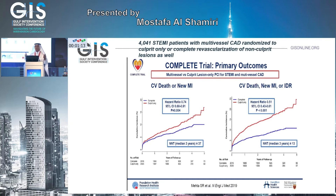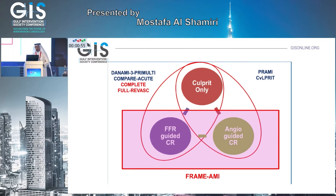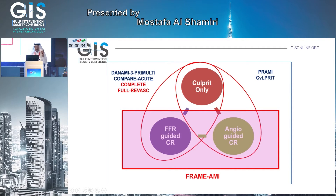The COMPLETE trial used only 2% FFR, with most procedures done at the index or acute presentation, and showed a significant complete revascularization benefit compared to culprit-only. We can see that PRAMI and Cardiovascular Neolaberties compared culprit-only with angiographic complete revascularization, while on the other side, FFR-guided complete revascularization was compared to culprit-only. What remains is to compare angiographic complete revascularization with FFR-guided complete revascularization.